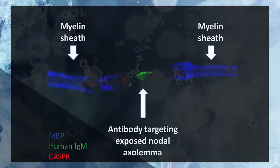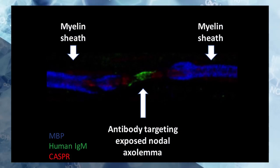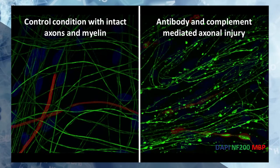By applying anti-disialosyl human antibodies to our myelinating co-culture system, we're able to demonstrate both the topographical targets of these antibodies in culture and also their pathological effects. Antibodies were found to target the exposed nodal and unmyelinated axolemma, as shown here. With the addition of a source of complement, acute and extensive axonal degeneration ensued.